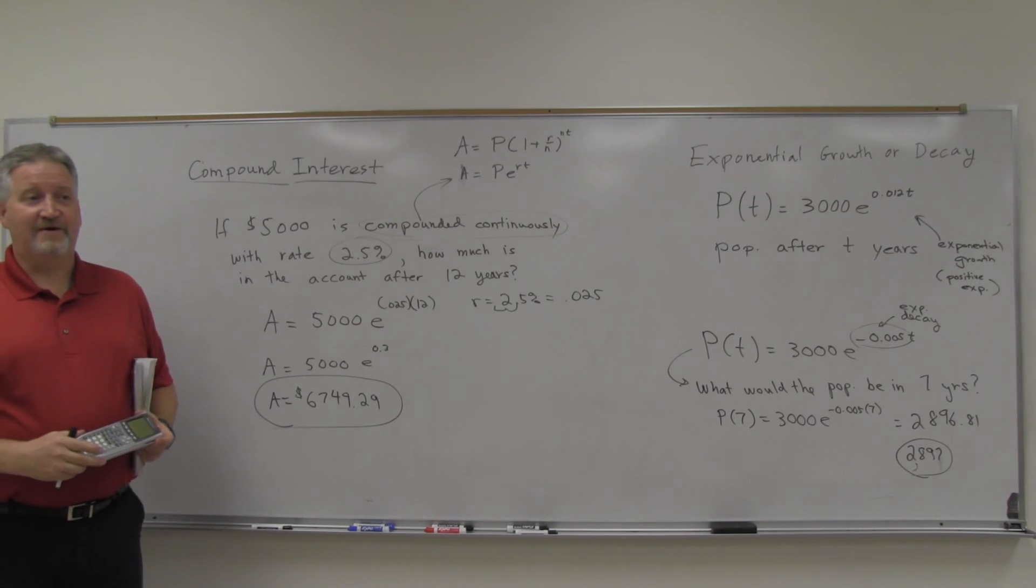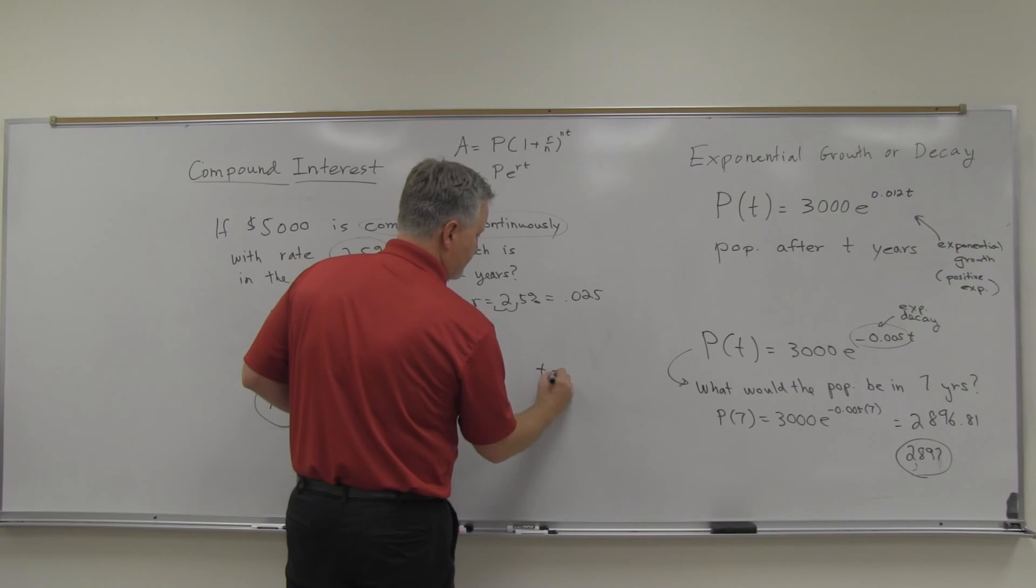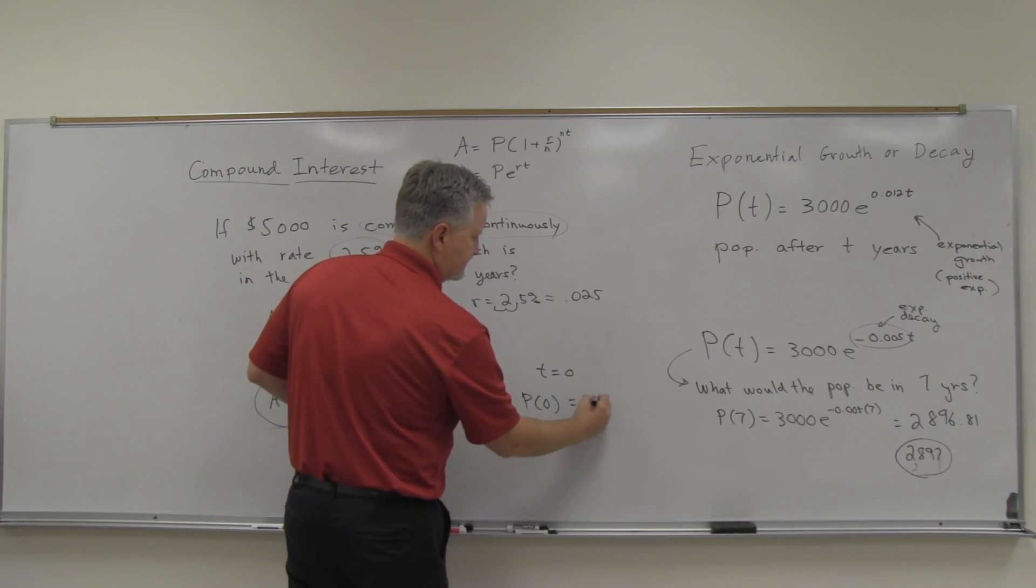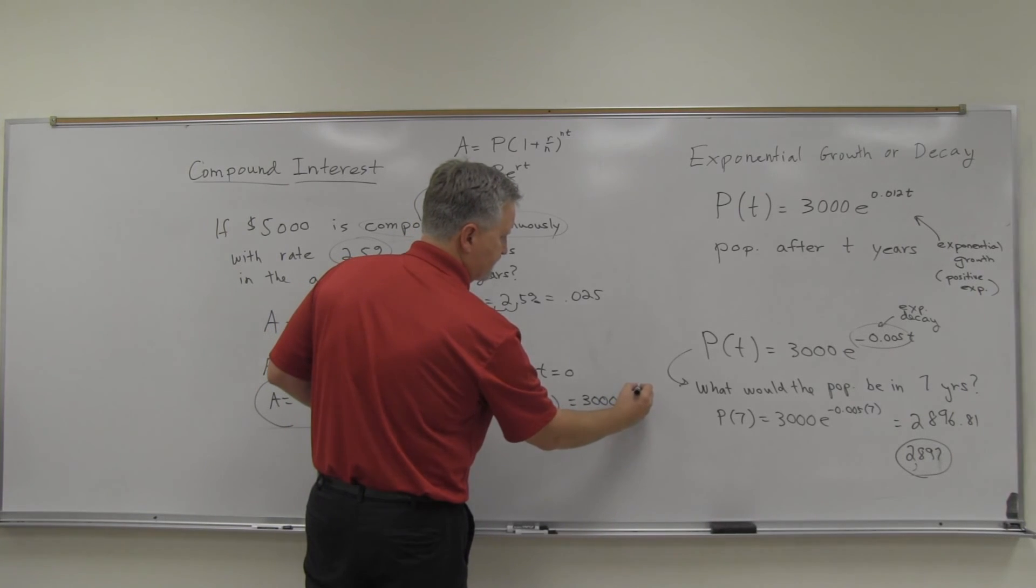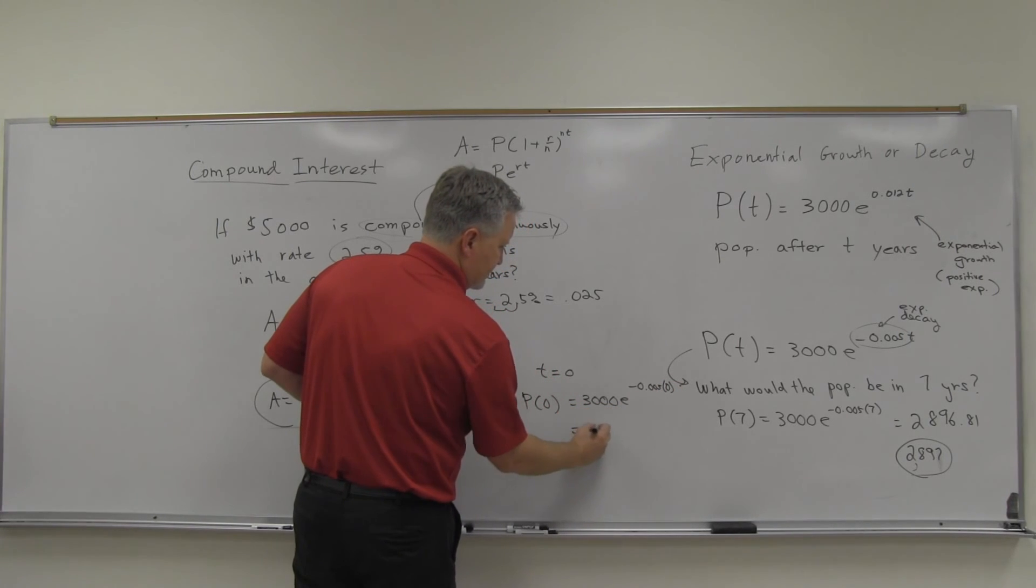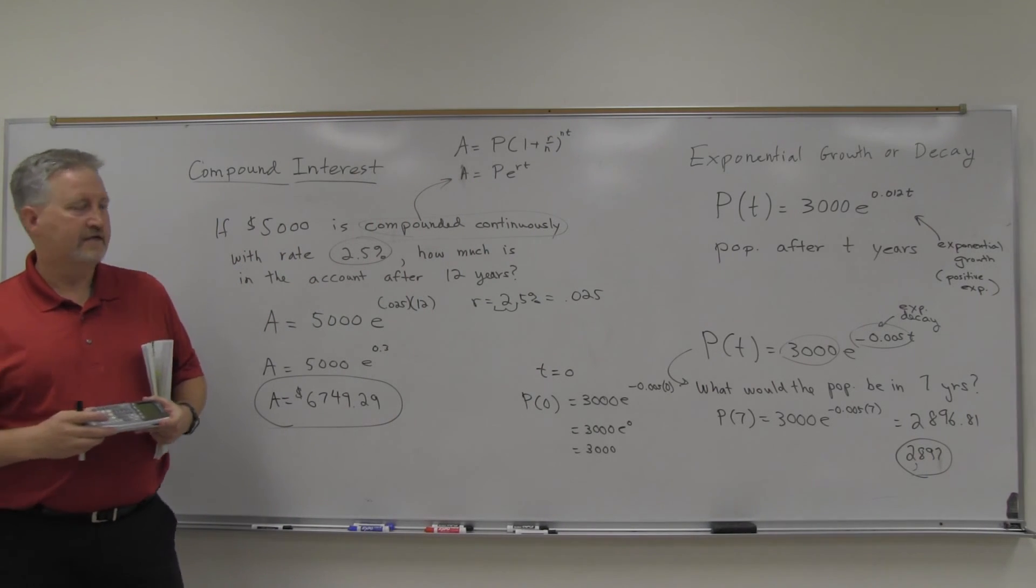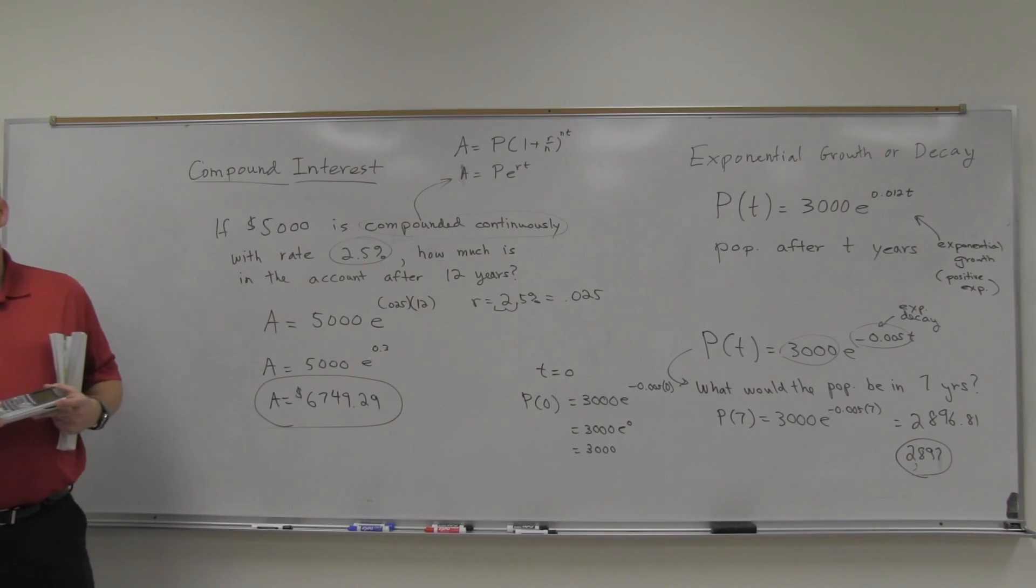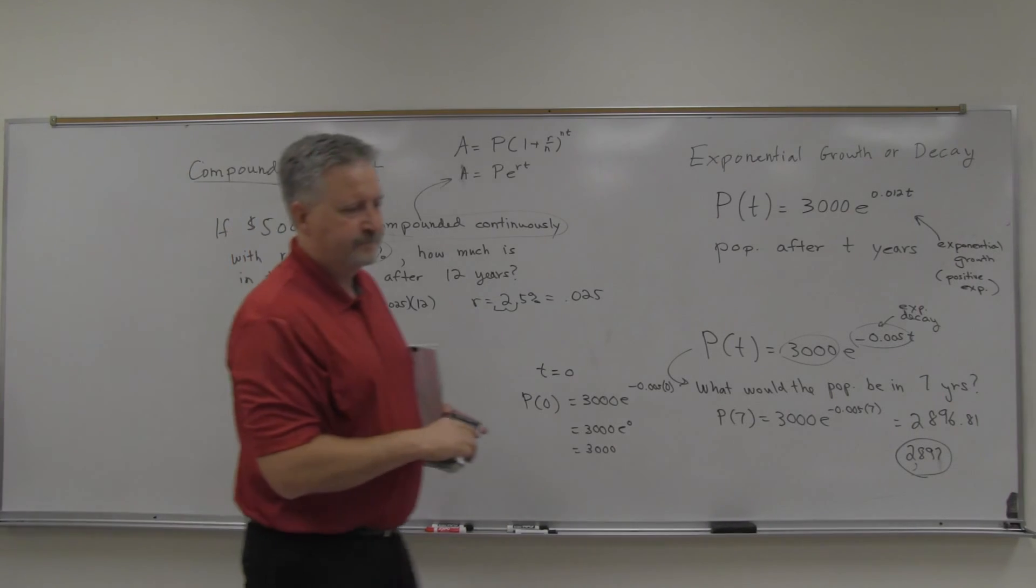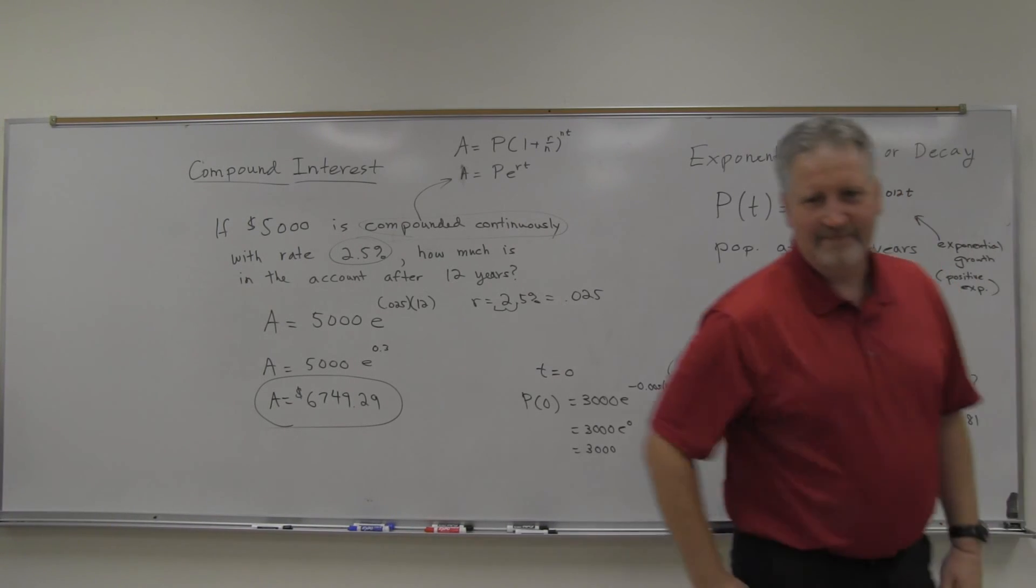So at times zero, T equals zero, we have 3,000 E to the negative 0.005 times zero. Well, that's going to make that 3,000 times E to the zero, right? Which is 3,000. So this number right here, that's the number you start with. The 3,000, just like on the compounding stuff. That number's the number that you start with, or it's at times zero. So anyway, any questions on that? Because I'll have some other problems on that later to come. Anything?